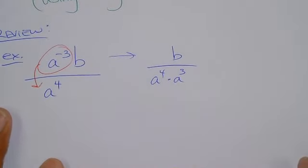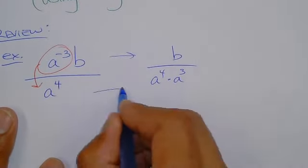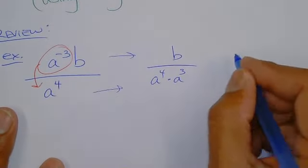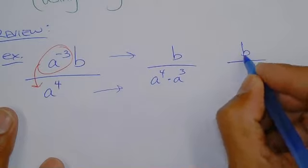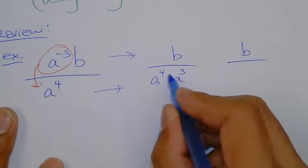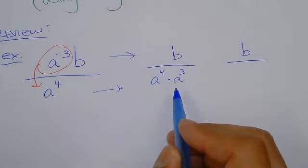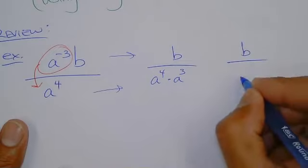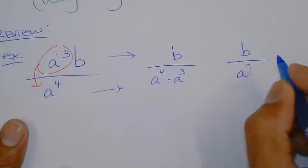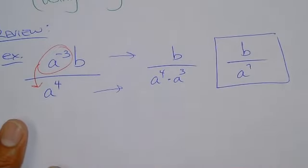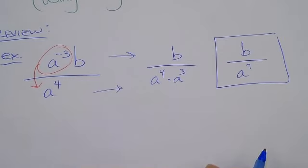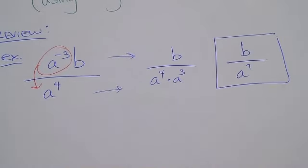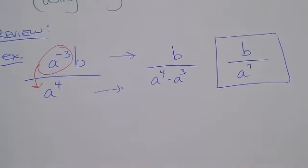So we know that one's going to have to go down. We're left with b in the numerator, and now you've got a⁴, and then the negative 3 turns to a positive 3. You already know this. The answer is b over a⁷ — product property, they add: you keep the a, you add 4 plus 3, giving a⁷.